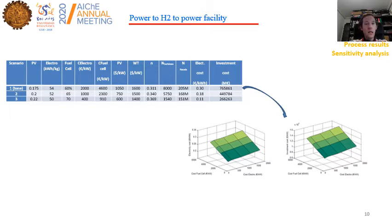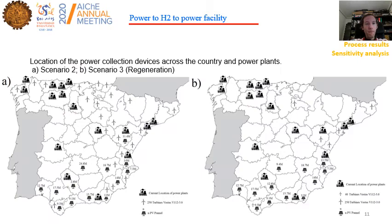As a result, before credits, we see that it is already possible to reduce the electricity production cost from 0.3 euros per kilowatt-hour by almost two-thirds to 0.11 euros per kilowatt-hour. We also perform some sensitivity analysis for the current case to evaluate how the improvement in these technologies affects the production cost and investment.